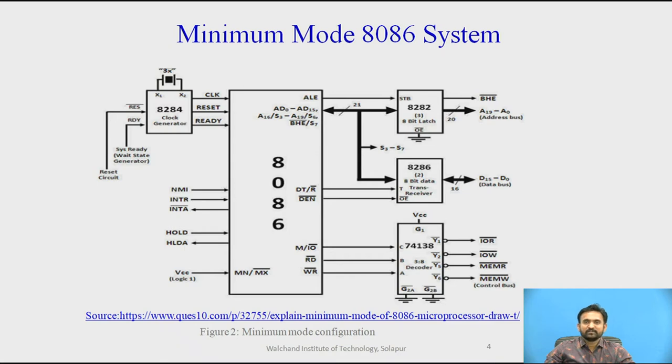The data bus is driven through 8286 8-bit transceivers. Two such transceivers are needed as the data bus is 16-bit. The transceivers are enabled through the DEN signal, while the direction of data is controlled by the DT/R signal. M/IO, RD, and WR are decoded by 3-to-8 decoder like 74138. Bus request is done using the HOLD and HLDA signal.